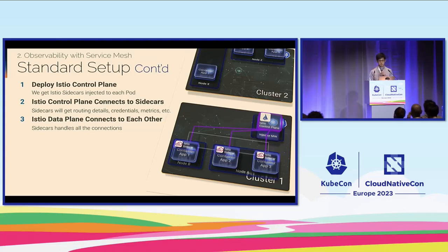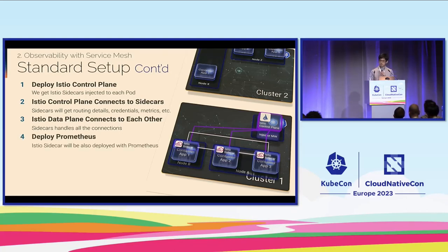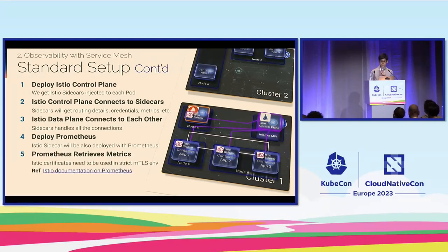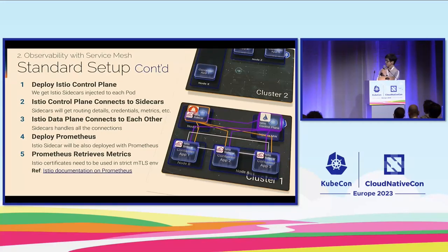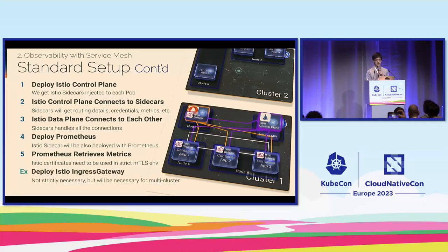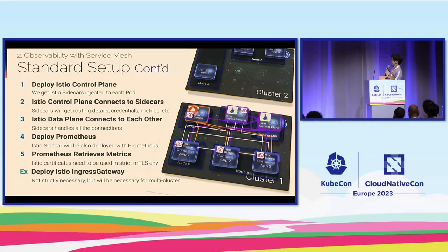With that data plane, Istio sidecars are connected to each other — those are the white lines in the diagram — so they can finally talk to each other and also have the metrics. Deploying Prometheus would have an Istio sidecar injected in this case, and the orange lines show Prometheus retrieving metrics from each Istio sidecar, or Envoy sidecar. It's quite a bit happening in the diagram. And if we also add an ingress gateway — which handles ingress from outside the cluster — it's quite a bit of moving parts.